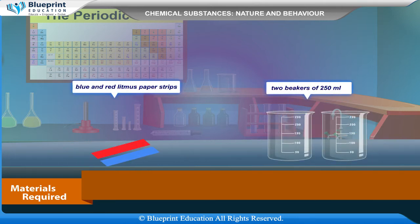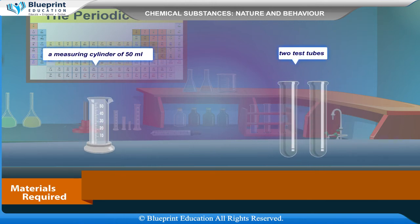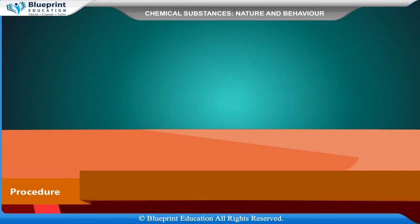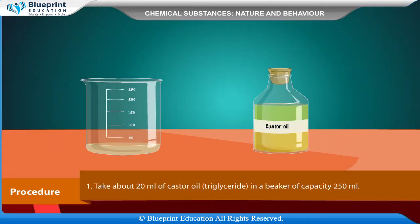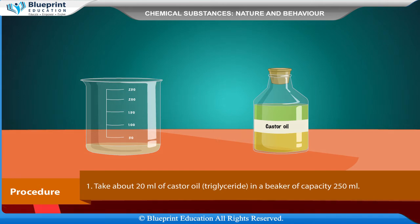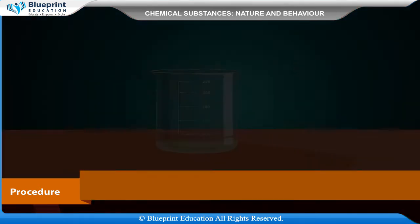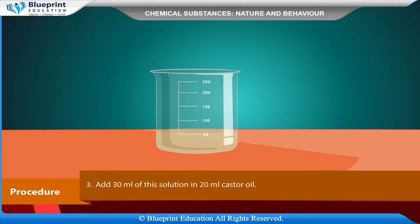Additional materials required are: sodium hydroxide (caustic soda), sodium chloride, distilled water, blue and red litmus paper strips, two beakers of 250 ml, a measuring cylinder of 50 ml, two test tubes, a glass rod, and a knife. For the procedure, take about 20 ml of castor oil (triglyceride) in a 250 ml beaker.